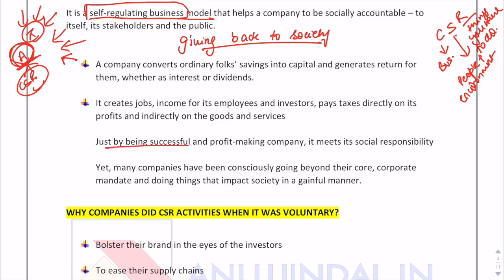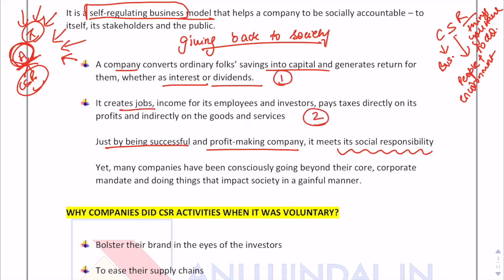It is interesting to note that just by being a successful, profit-making company, a company is meeting its social responsibility. A company takes capital from investors and returns it in the form of interest or dividends. It also creates employment opportunities, gives income to its employees, pays taxes directly and indirectly. So just by doing its core business activities, it is involving itself in CSR activities.